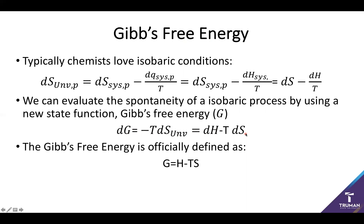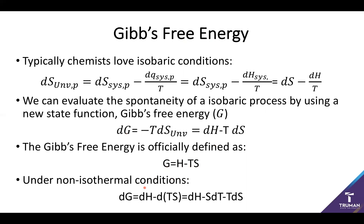It is worth noting that the Gibbs free energy is officially designated not in the differential form, but instead simply as G equals the enthalpy minus temperature times the entropy. This actually gives a more full description of the non-isothermal definition of change in Gibbs as the change in enthalpy minus SdT minus TdS, because we have to allow for some variance of temperature of the system. So while we're typically working with Gibbs under isothermal conditions, it is useful to have the non-isothermal definition.